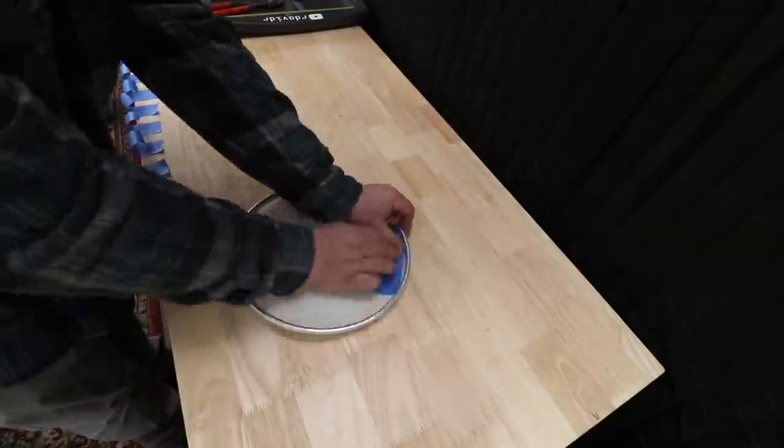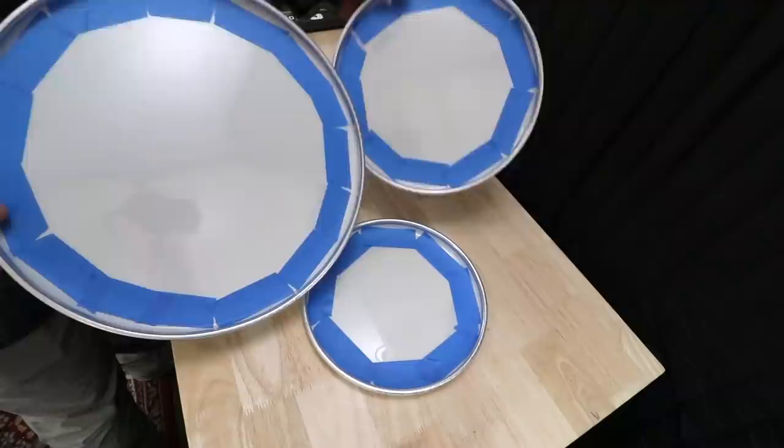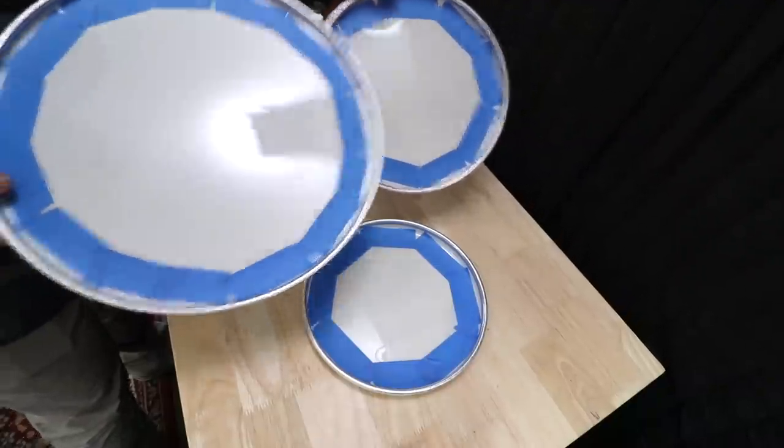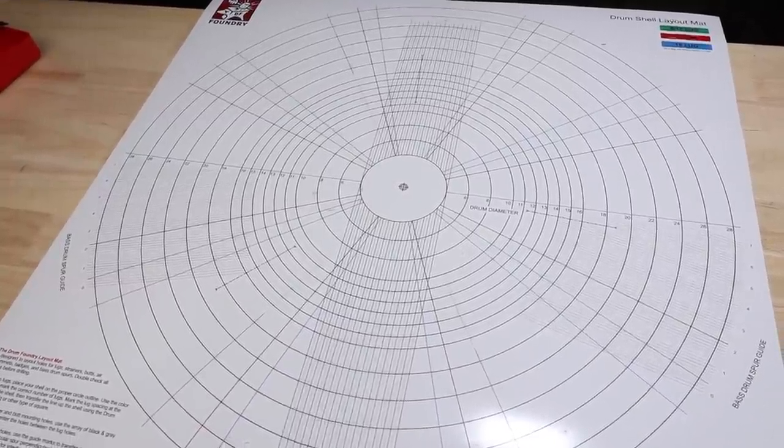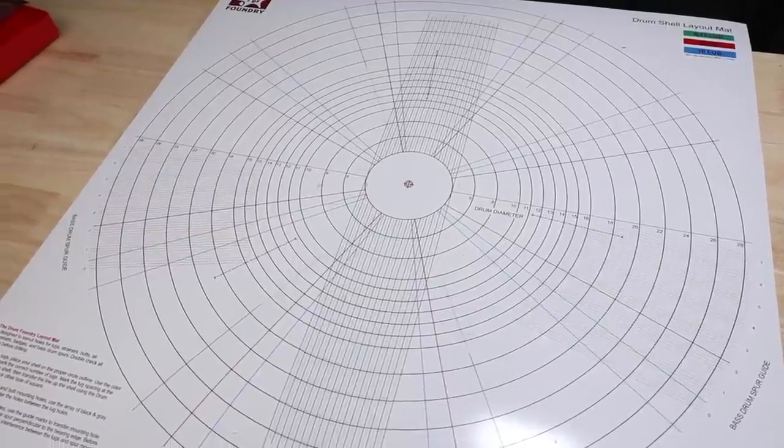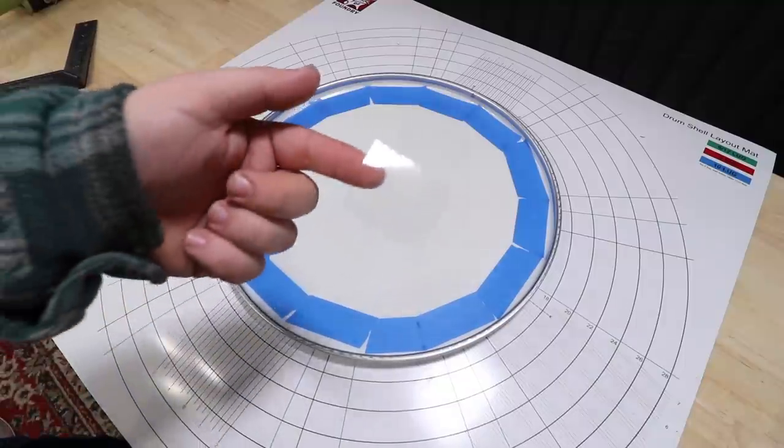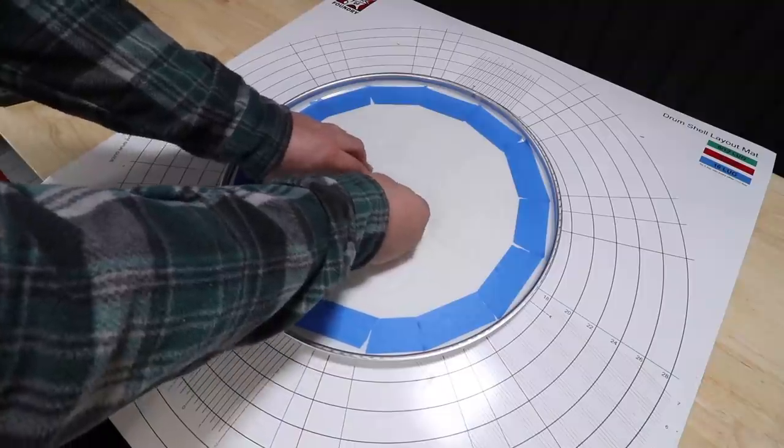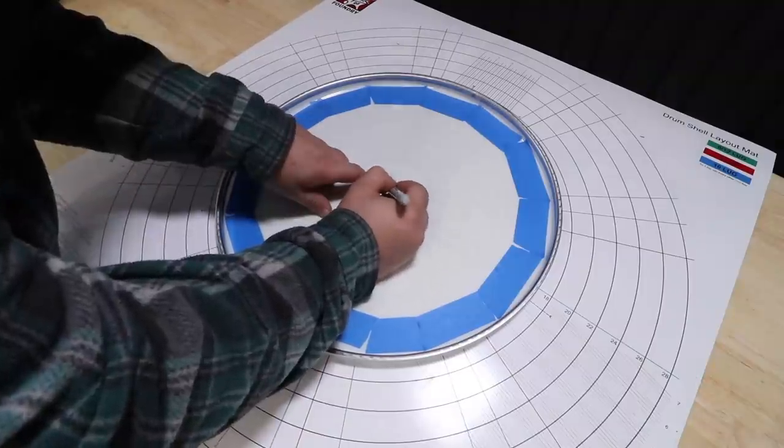First up, I'm putting some tape around the edge of the head so I don't mark it up. And for the layout, I'm using this mat, which I bought. But you can easily find free ones online you can print yourself. So I'll just center up the head and put some clear tape on the center so I can see through it, and then mark the center.